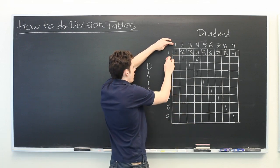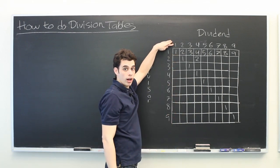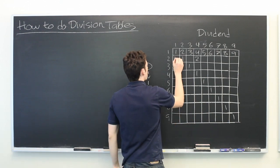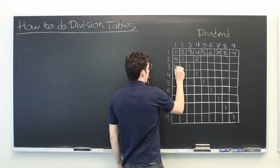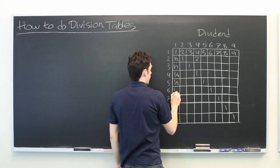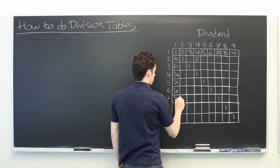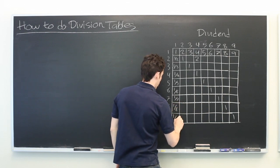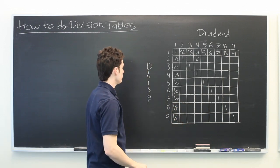One divided by any of these numbers will give a fraction with that number on the bottom. We have one half, one third, one fourth, one fifth, one sixth, one seventh, one eighth, and one ninth.